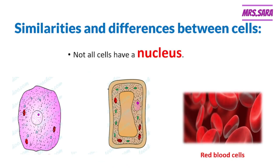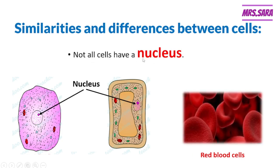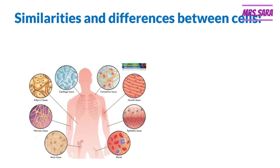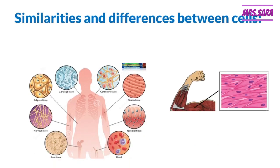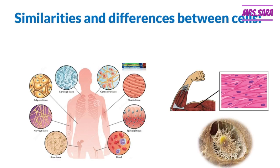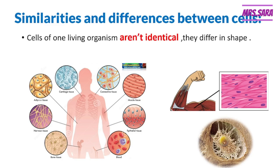We have another difference between cells, Primary 6. Not all cells have a Nucleus. We have a Nucleus in the Animal Cell, and also a Nucleus in the Plant Cell. But not all cells have a Nucleus — for example, Red Blood Cells have no Nucleus. Also, in one living organism, we have different shapes of cells. This is the shape of the Muscle Cell, and this is the shape of the Bone Cell. So cells of one living organism aren't identical — they differ in shape.